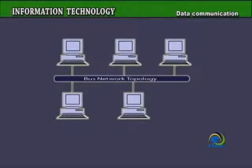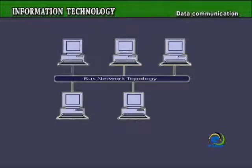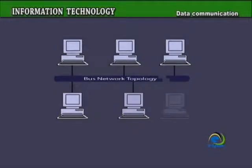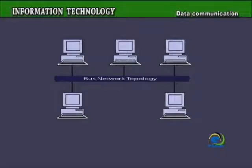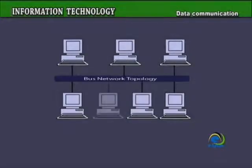A bus network is simple and reliable. If one node fails to operate, all the rest can still communicate with each other. For a major disruption to take place, the bus itself must be broken somewhere. Bus networks are easy to expand — additional nodes can be added anywhere along the bus.